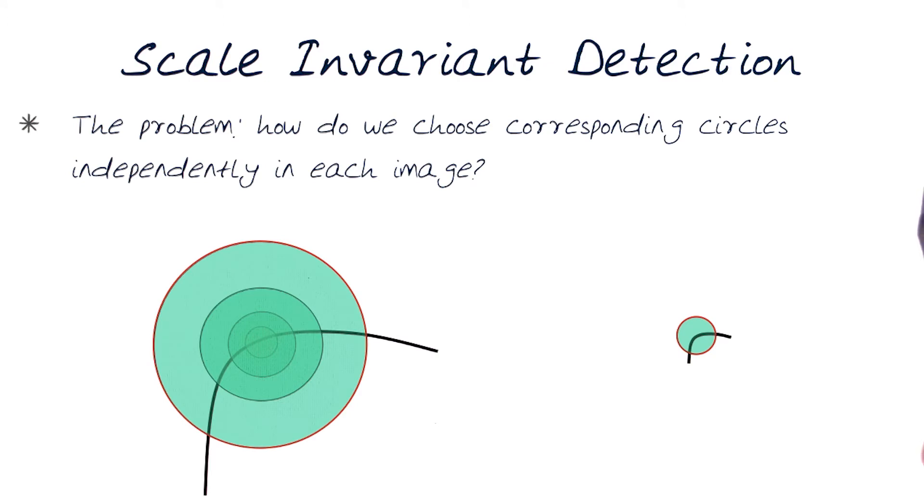The problem is how do we choose the corresponding circles for both of them? And of course, that could be computationally a challenging task. We could do brute force search methods and stuff like that.